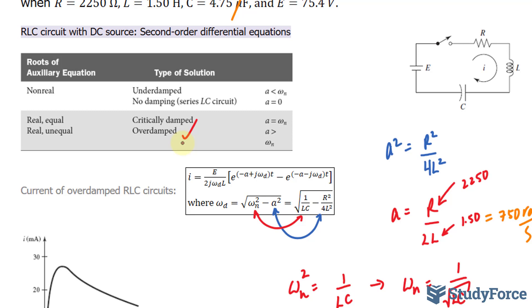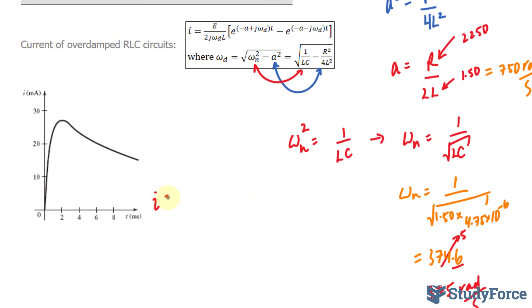When you have an overdamped situation, you have to use this formula. And, this formula is carefully derived using second-order differential equations. Let's go ahead and start to fill it in. And, we have the current is equal to our voltage source, which is 75.4, over 2 times j omega dL. Now, let's find what omega d is and where that j is coming from. Now, you'll find out very soon that that j represents an imaginary unit. And, here's why.